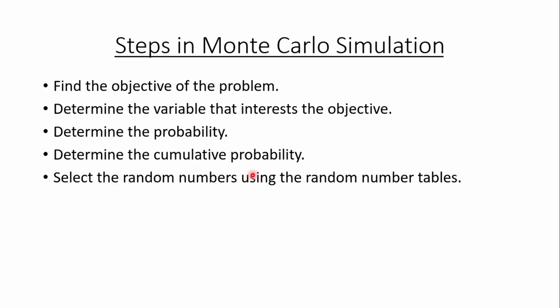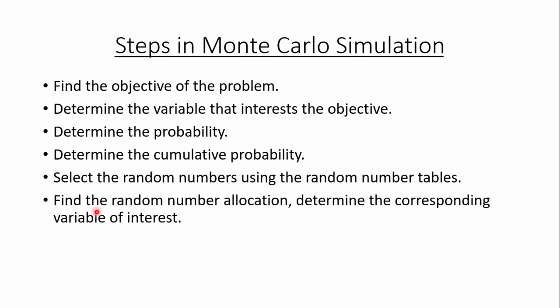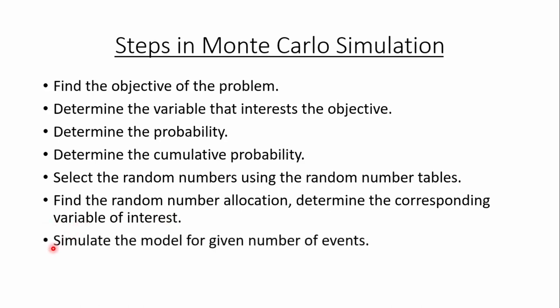Then we need to select the random numbers using the random number tables. In Monte Carlo simulation, random numbers are either directly given in the problem or we select them using random number tables. Then we find out the random number allocation — we determine which random number interval the selected random numbers fall into. After finding the random number allocation, we determine the corresponding variable of interest and simulate the model for the given number of events. These are the steps in Monte Carlo simulation.